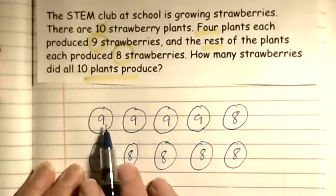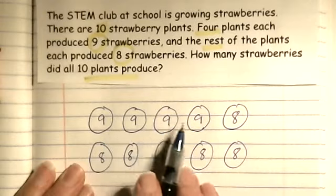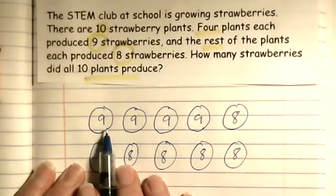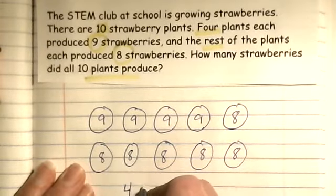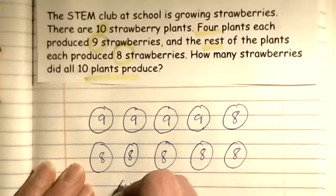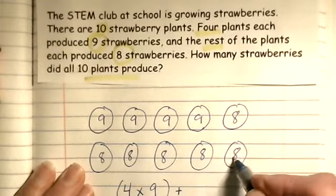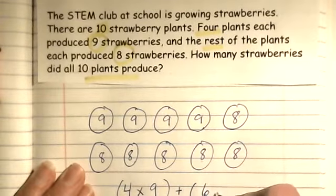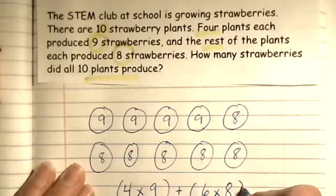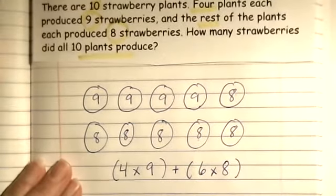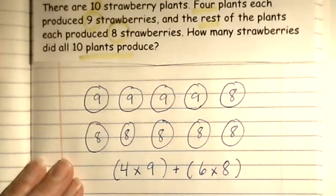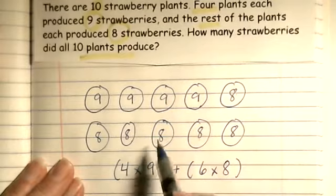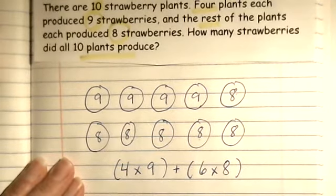So, I see that there are one, two, three, four nines, so I could do four times nine, plus one, two, three, four, five, six times eight. I could do four times nine. Four of the plants had nine, and six of them had eight.